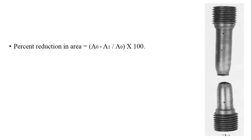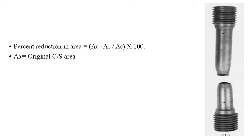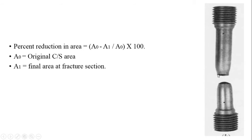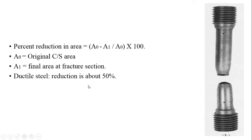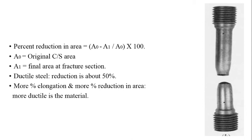Percent reduction in area is calculated as (A0 − A1) / A0 × 100, where A0 is the original cross-sectional area (diameter 12.625 mm or 0.505 inches per ASTM) and A1 is the final cross-sectional area at the fracture section — the minimum area at the section where the mild steel has broken. For ductile steel, the reduction is about 50%. More percentage elongation and more percentage reduction in area indicate that the material is more ductile.